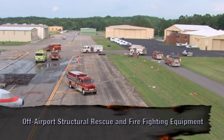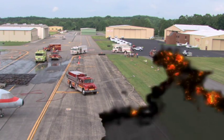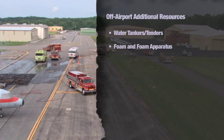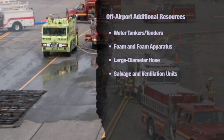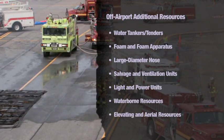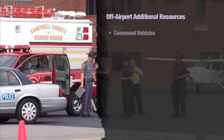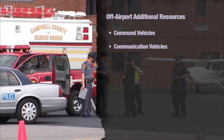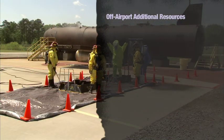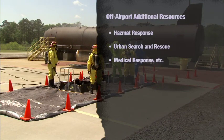The resources immediately available for incident response may be insufficient. Off-airport fire companies may be able to provide additional equipment such as water tankers, tenders, foam and foam apparatus, large diameter hose, salvage and ventilation units, light and power units, waterborne resources, and elevating and aerial apparatus. Off-airport companies may also provide command vehicles, communication vehicles, helicopters, and air units. Finally, off-airport personnel may be needed for hazmat response, urban search and rescue, medical response, and more.